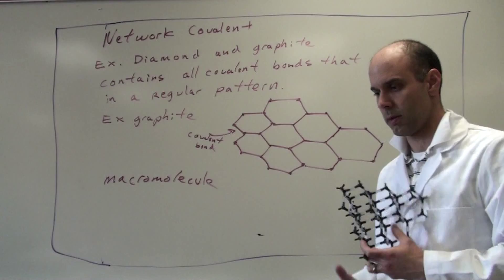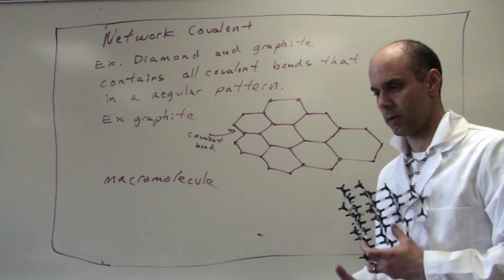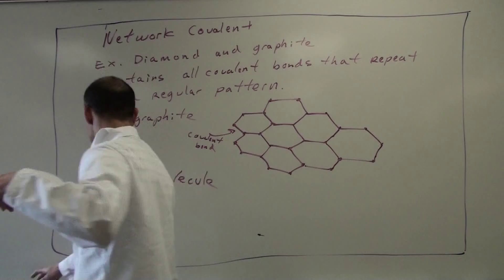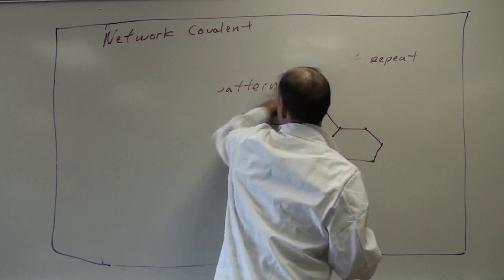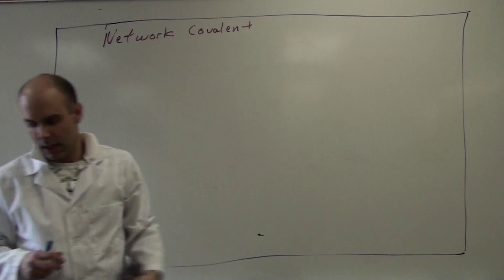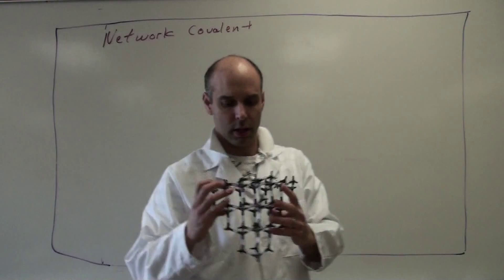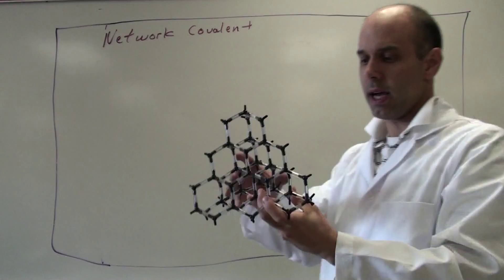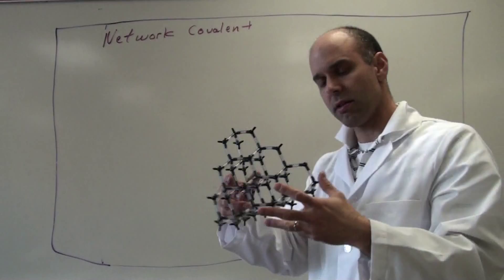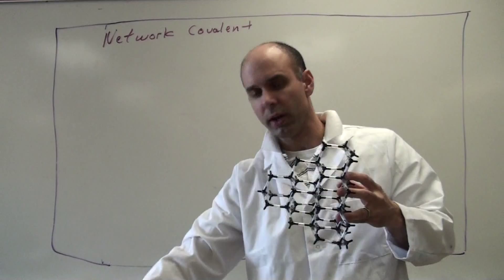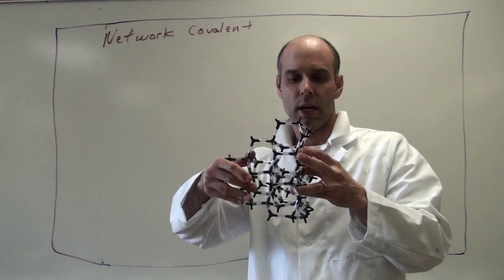A diamond has a very different structure. A diamond is also composed completely of carbon, but instead of being a two-dimensional structure like graphite, the hexagonal pattern is three-dimensional — still hexagons, but linked in three dimensions. Because of that, when you try to deform a diamond, you stress not just in one dimension but in three dimensions, making it very, very difficult to break. Therefore, diamond is one of the hardest substances known to mankind.